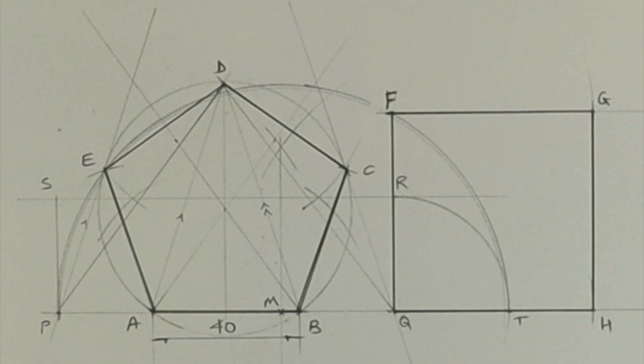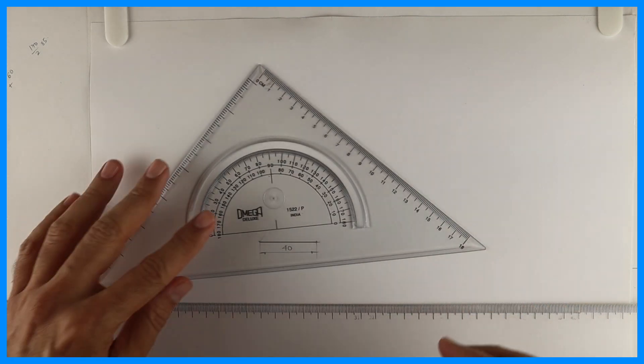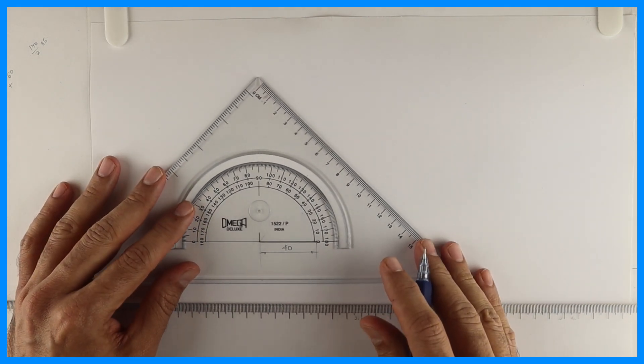First we need to convert pentagon into triangle, triangle into rectangle, and then rectangle into square. So first we will draw a pentagon, you take side 40.